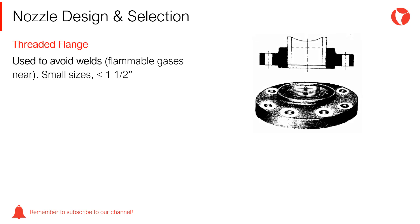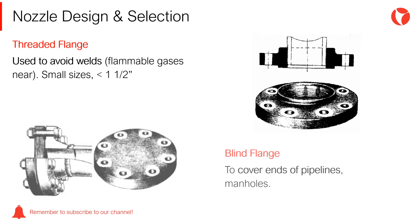Threaded flanges are useful when welding is to be avoided — for example, in processes where flammable gases may exist. And finally, Blind flanges — they are used to cover ends of pipelines, manholes of pressure vessels, and handholes.